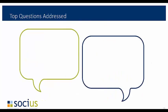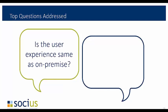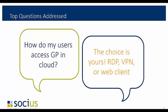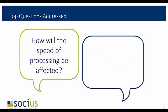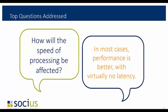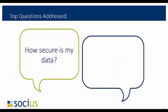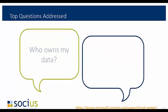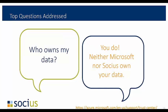Here are the top questions we see when interested parties look to migrate to the cloud. Is the user experience the same as on-premise? Yes — many users report improved performance overall. How do users access GP in the cloud? You can connect through RDP, VPN, or Web Client. How will processing speed be affected? In most cases, performance is better with virtually no latency. How secure is my data? Very secure — Microsoft Azure provides several layers of virtual and physical security measures; please visit the Azure Trust Center. Who owns my data? You do — neither Microsoft nor Socius own your data.